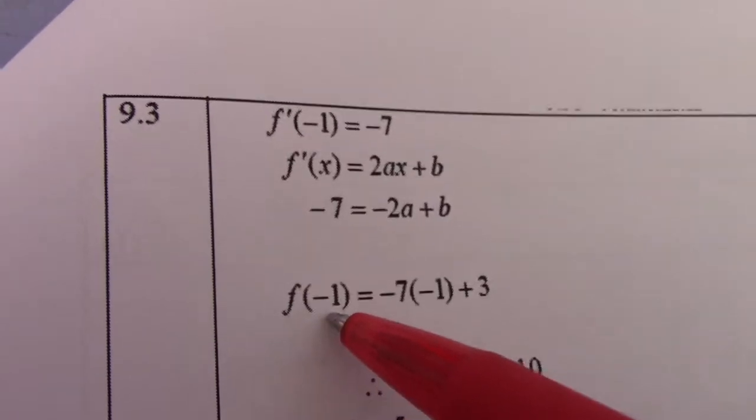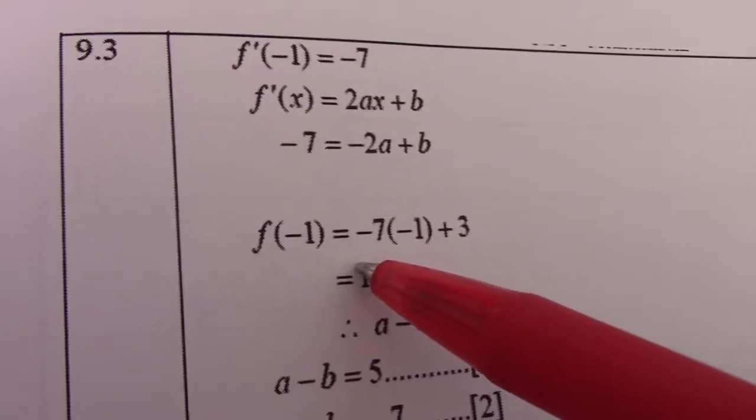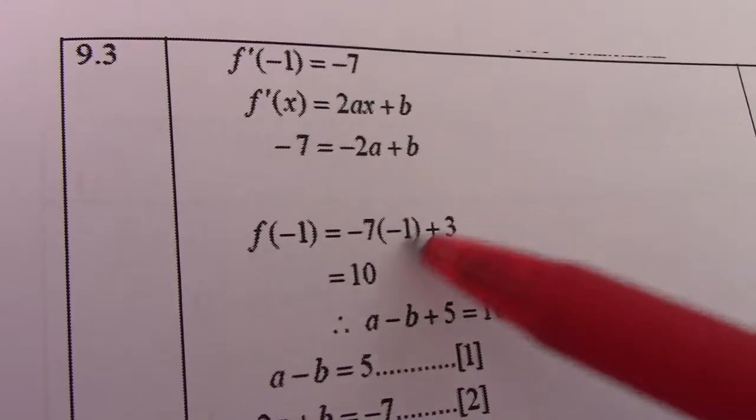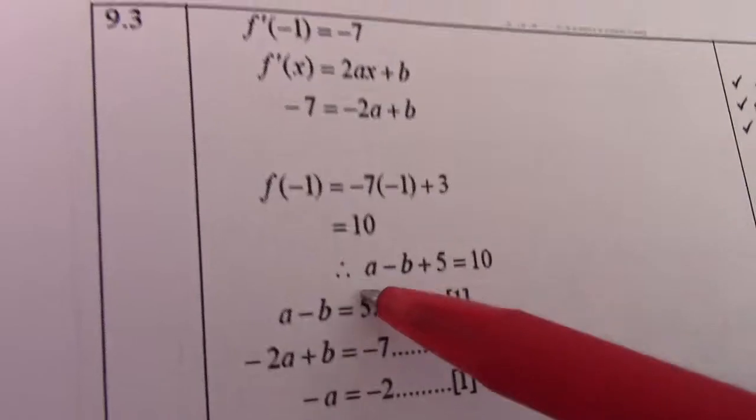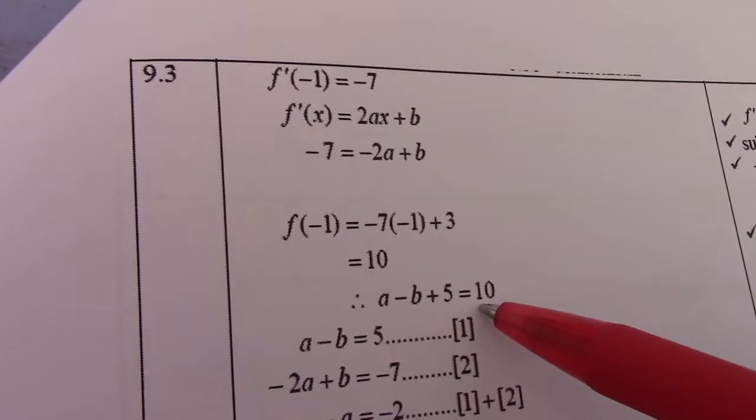Then f(-1), if we substitute x = -1 into the tangent equation y = -7x + 3, that gives me 7 + 3, which equals 10. So therefore, I can say a - b + 5 = 10.